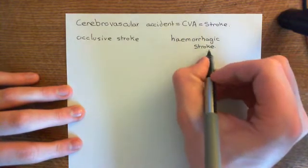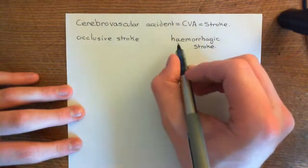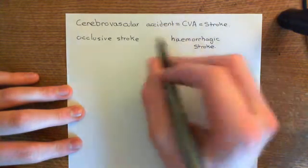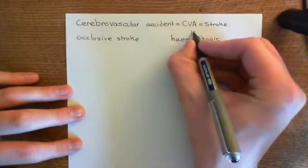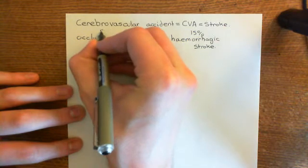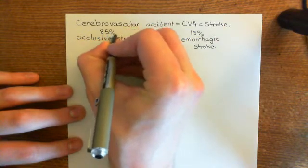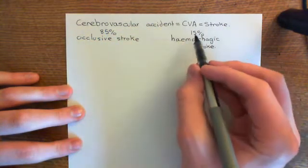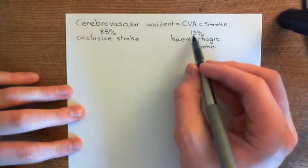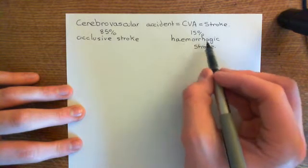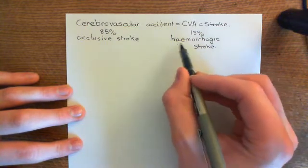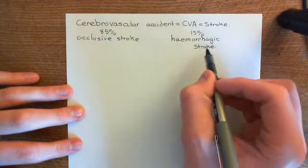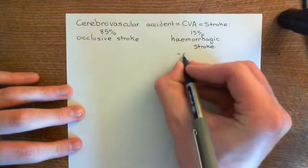Hemorrhagic strokes generally happen in younger people, whereas occlusive strokes generally happen in older people. The statistic is generally 15% of strokes are hemorrhagic strokes and 85% are occlusive strokes. The only risk factor I know for hemorrhagic stroke is too high blood pressure, which can cause blood vessels within the brain to start bursting open, and specifically it's associated with the use of certain psychostimulants such as cocaine and amphetamines.